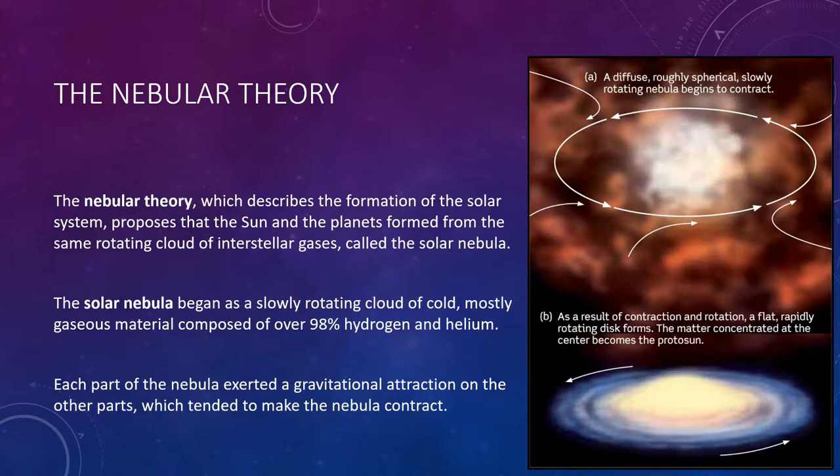Once the collapse started, gravity enabled it to continue. The mass of the cloud remained the same as it shrank, so the strength of gravity increased as the diameter of the cloud decreased. In other words, you're compacting more mass into a smaller area, and so the gravity becomes stronger.